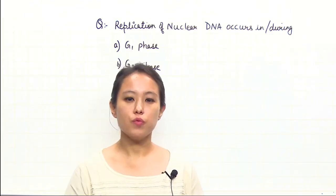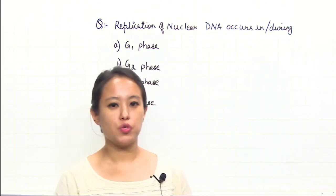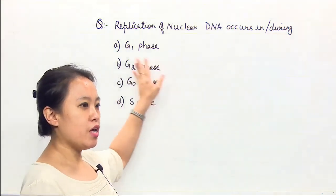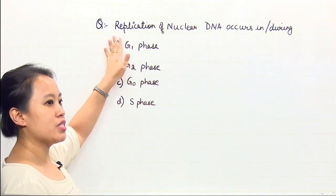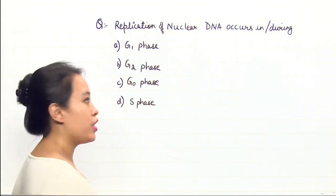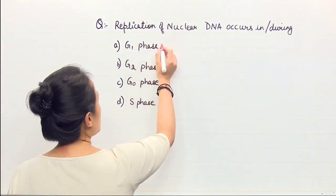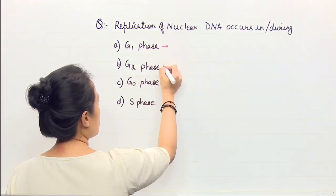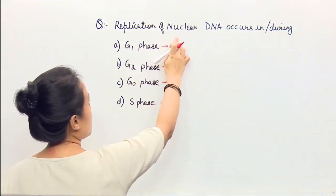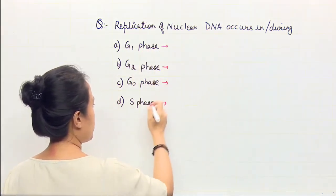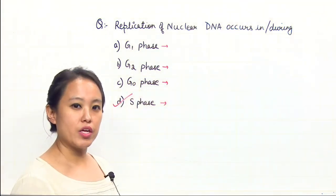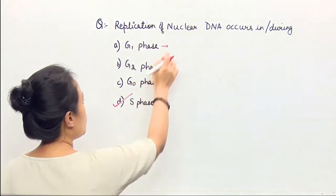Regarding what we have done so far, let's have a question regarding the same. The question here says that the replication of nuclear DNA occurs in or during. Let me write it down for you. First one is G1 phase. I am just going to write down each individual answer here. The nuclear DNA replication happens in S phase.